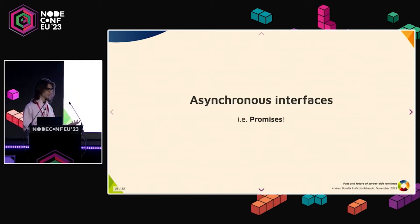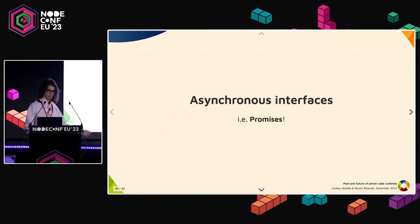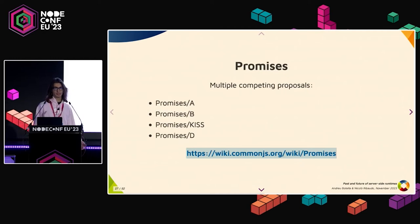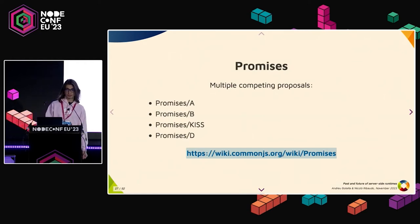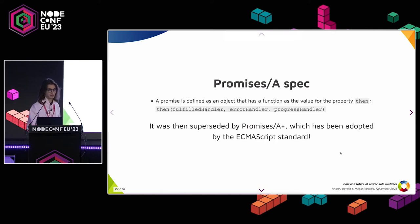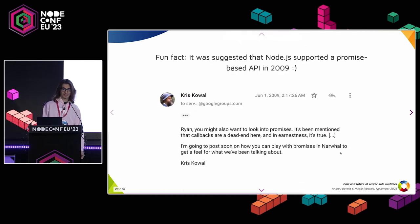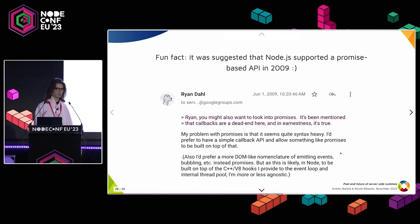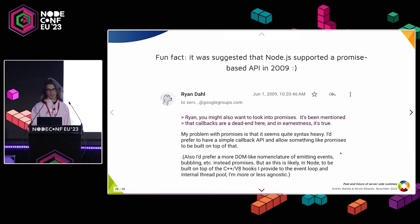Maybe having require asynchronous would have helped today with migrating to ESM. There were also some attempts to make them work in the browser. AMD, for example, came out of this effort, but it ended up not working very well because it had more restrictions than just running CommonJS on the server. Something else that came out of CommonJS is asynchronous interfaces. If you try to read the Promises A spec, you see it provides a 'then' handler which takes a bunch of callbacks — very similar to what we have today. This was then evolved into Promises A+, which was eventually adopted by the ECMAScript standard.